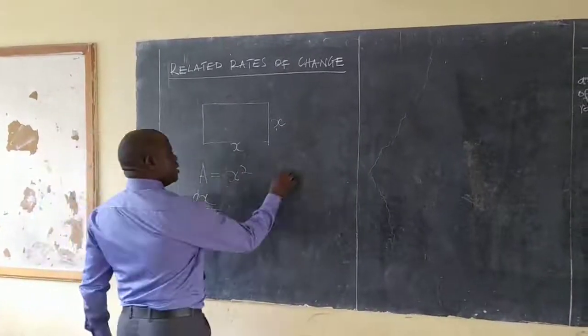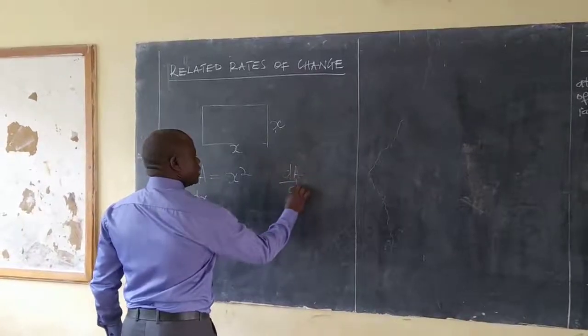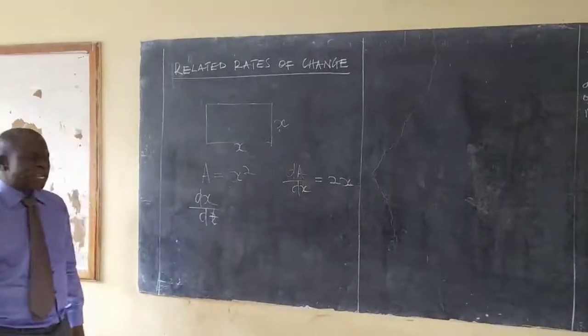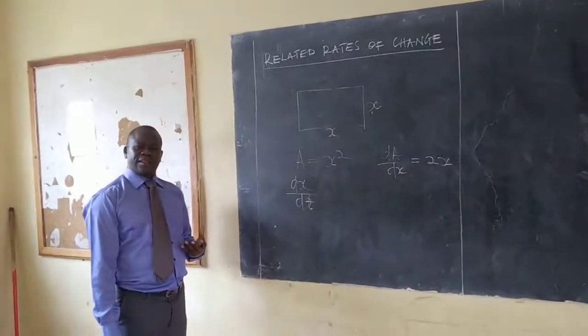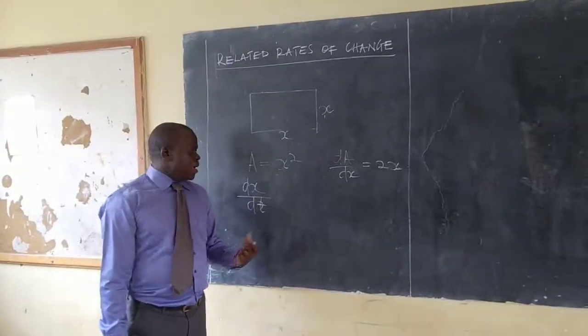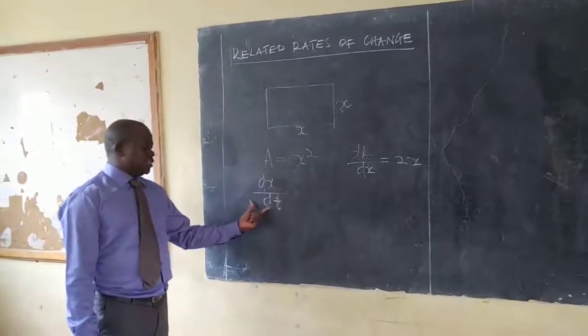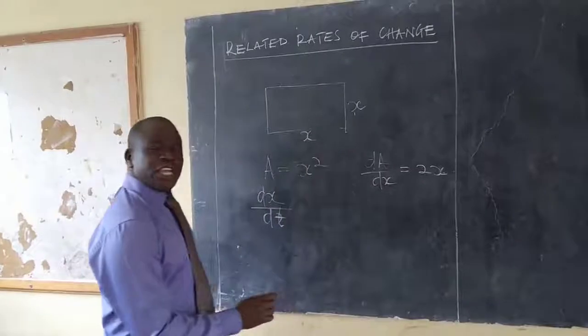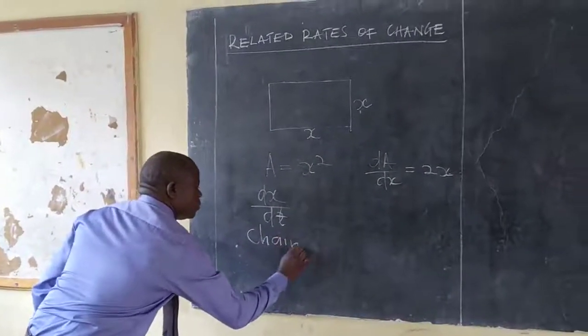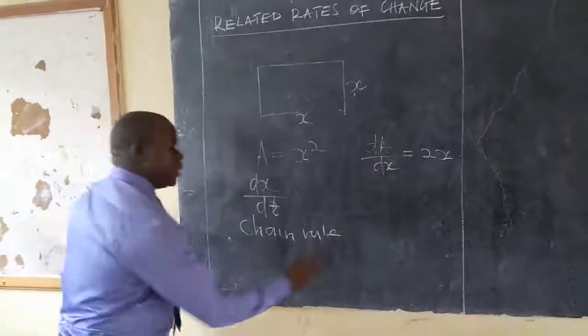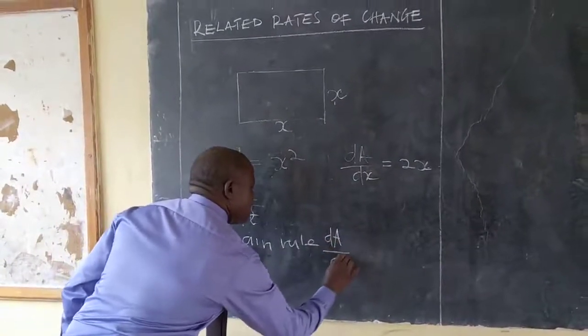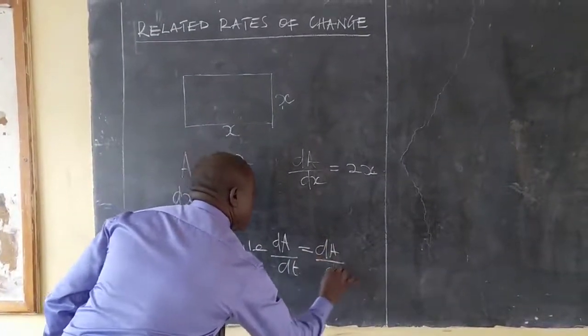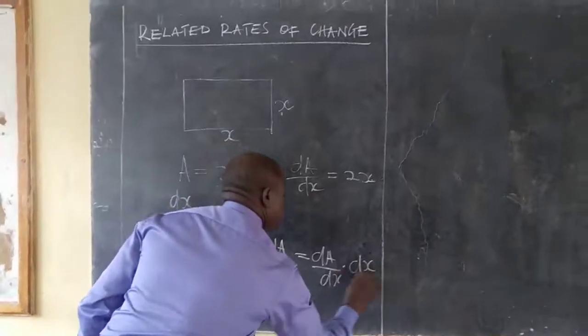I can get the rate of change of area, which is dA/dt, which gives me 2x dx/dt. Now, I will be interested in the rate of change of x. Now, I will be interested in finding the rate of change of area times dx/dt.